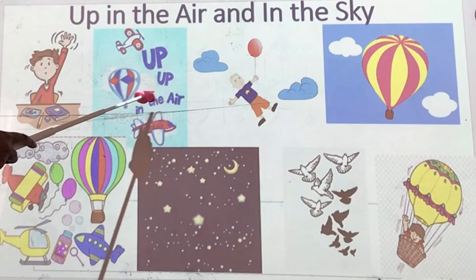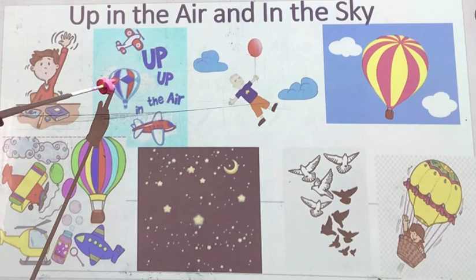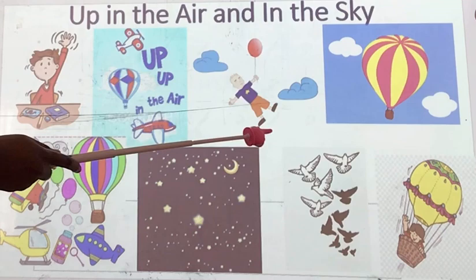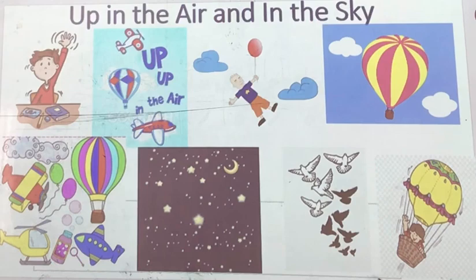Look at some of the things that fly in the air. We have the airplane, we have the hot air balloon, we have the rockets. These are some of the things that fly in the sky. When you have a balloon and throw it up, where does it go? It goes up in the sky, it flies in the air. And know that everything that goes up must surely come down.